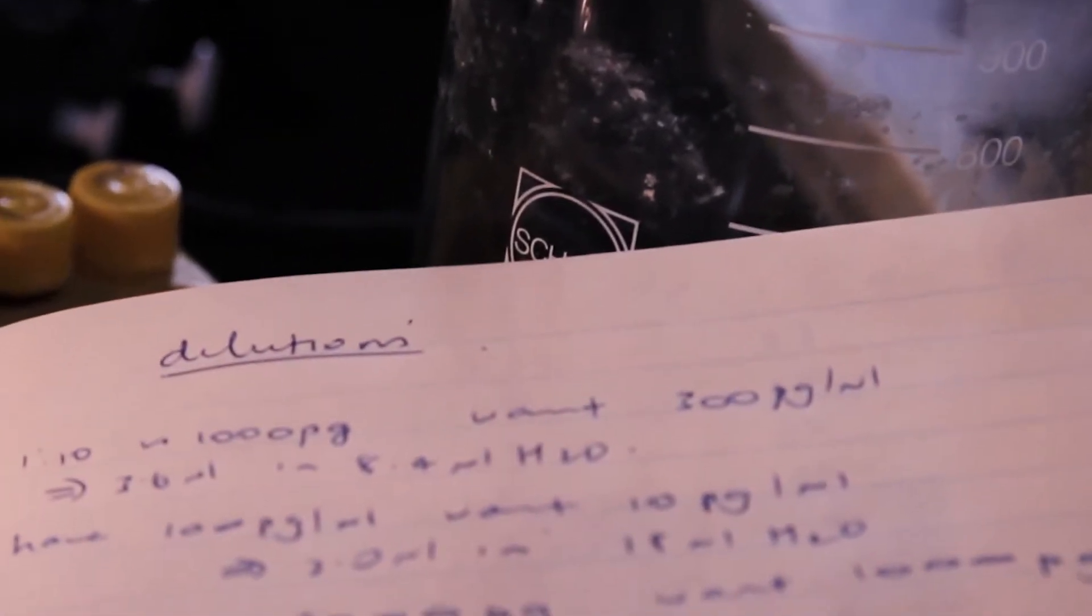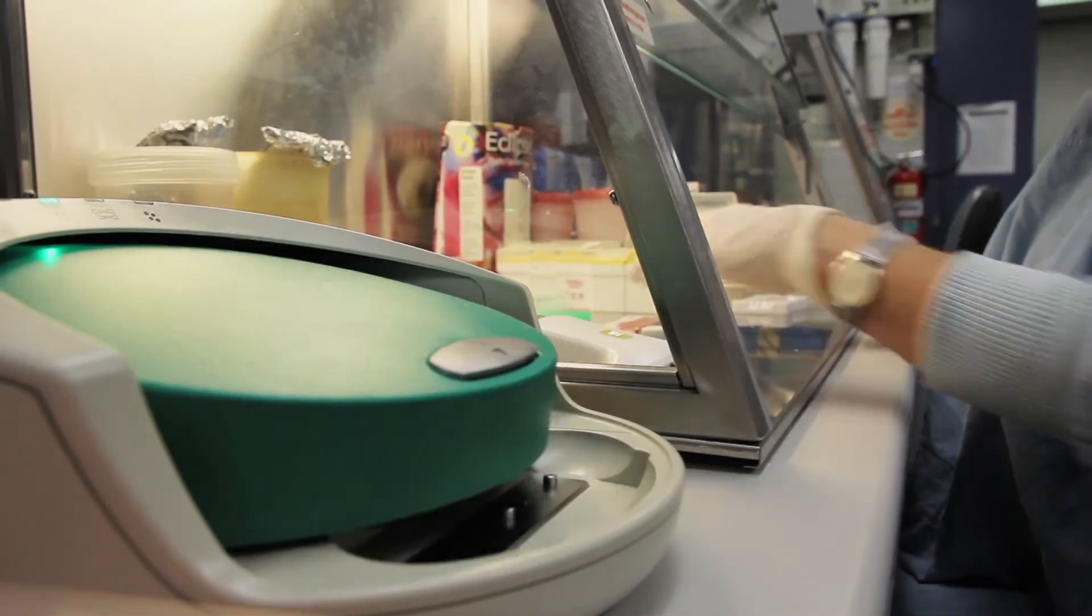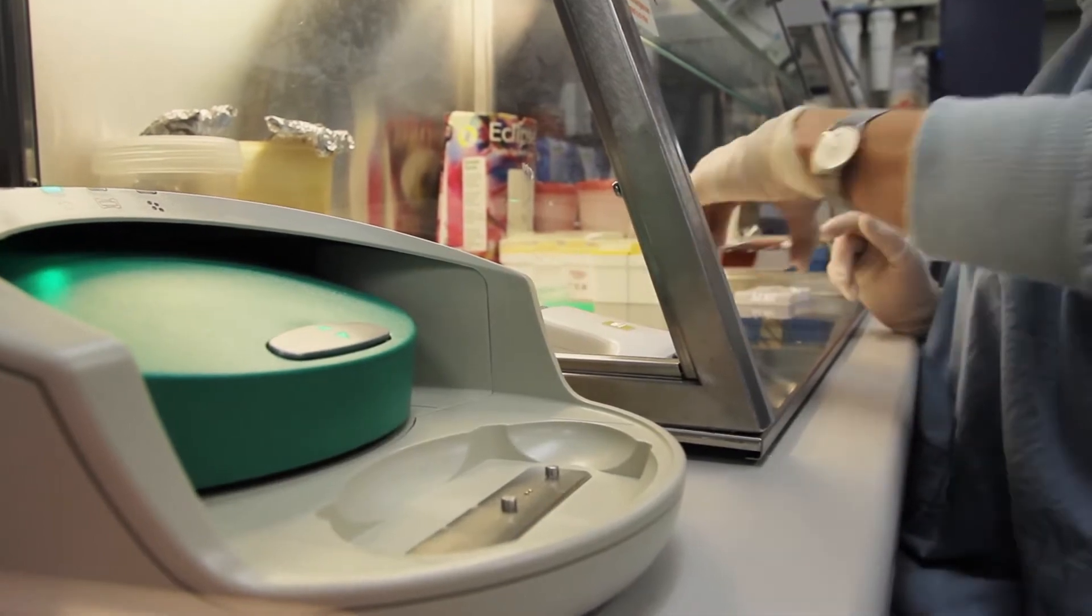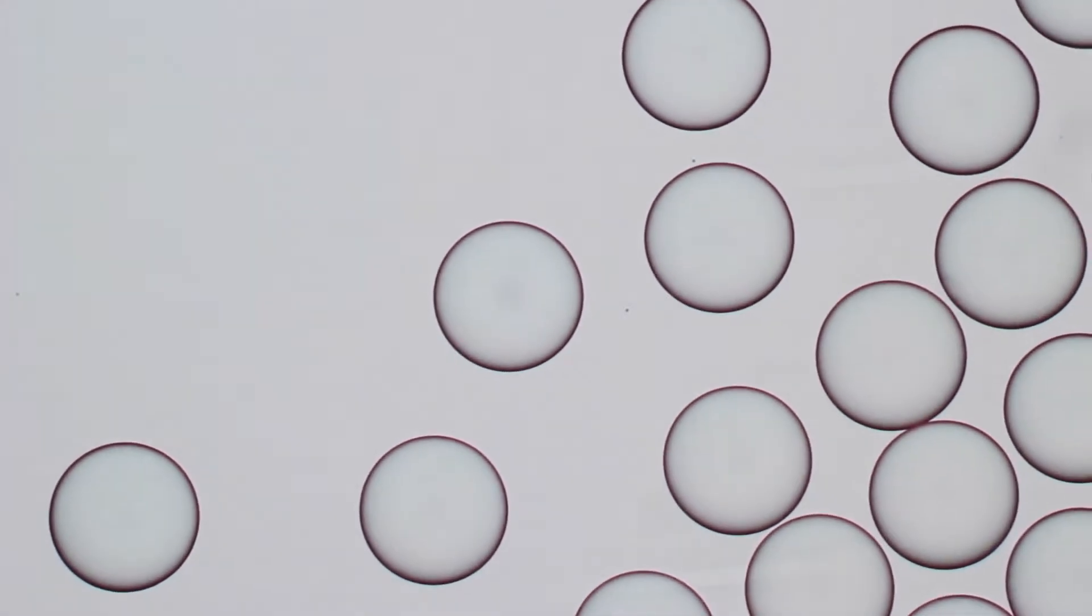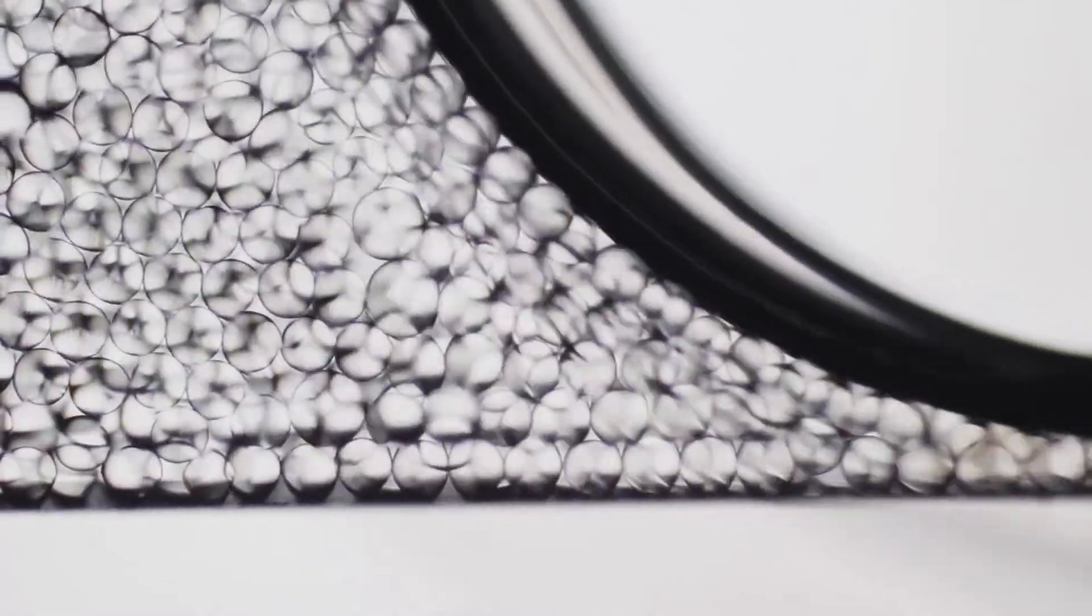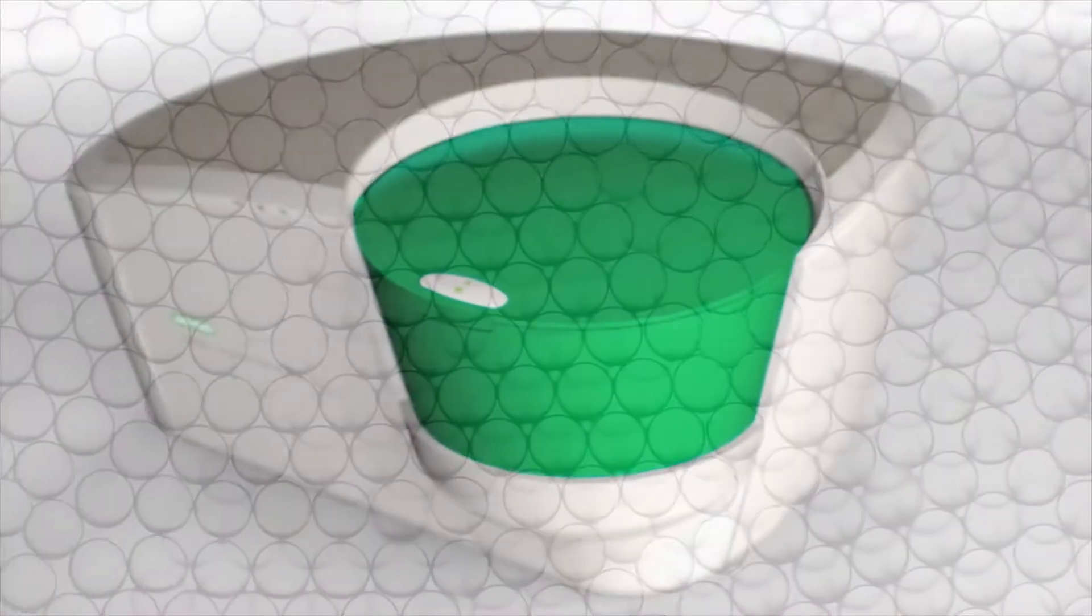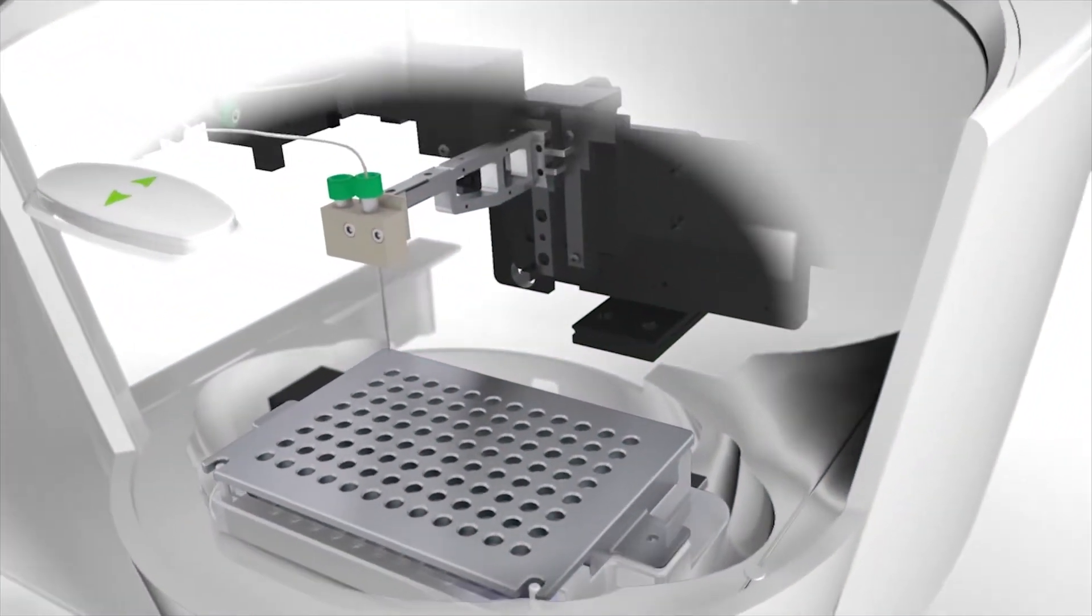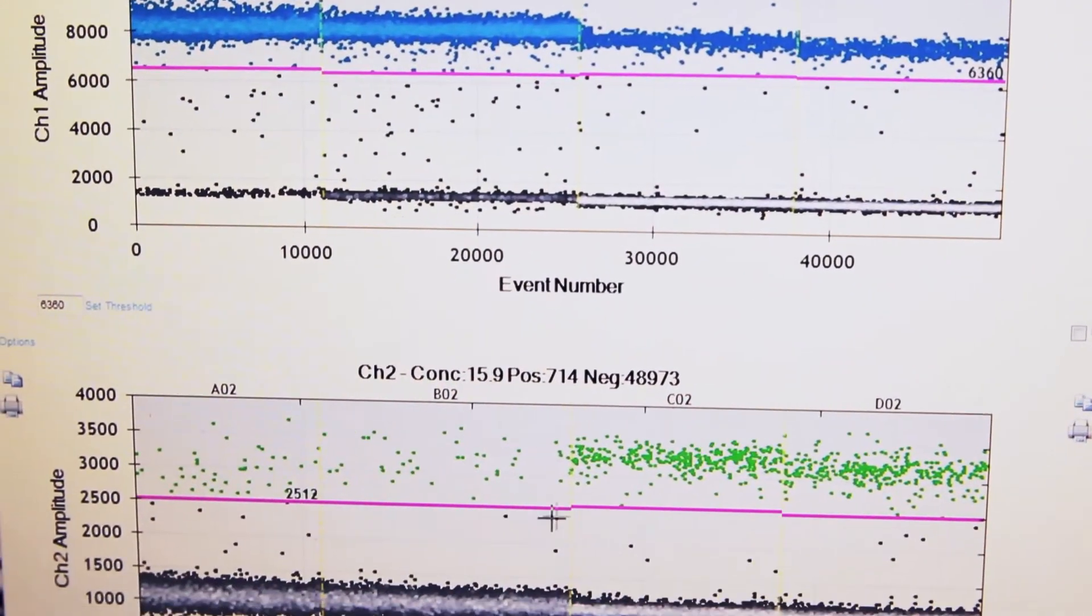The essence of digital PCR is that you have to perform multiple replicates, some of which are positive and some of which are negative. Droplet digital PCR enables you to produce the replicates. Each replicate is a droplet. You get 20,000 droplets set up in a few minutes and read in a short time. So it greatly facilitates producing multiple replicates.